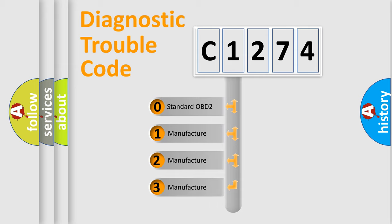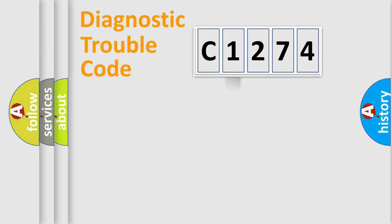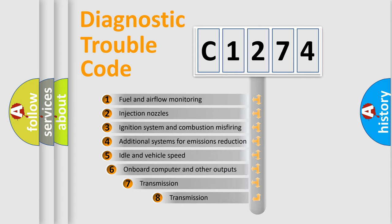If the second character is expressed as zero, it is a standardized error. In the case of numbers 1, 2, 3, it is a car-specific error.